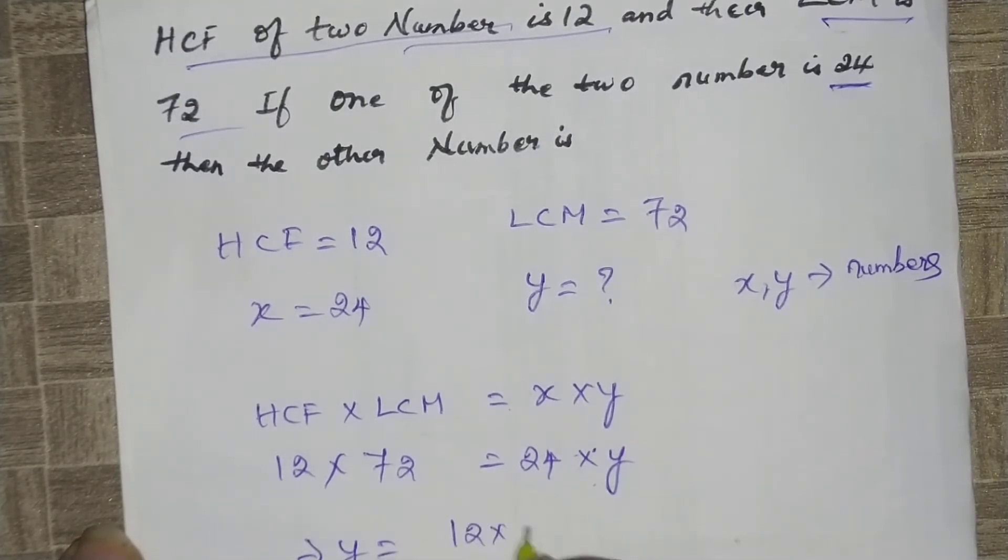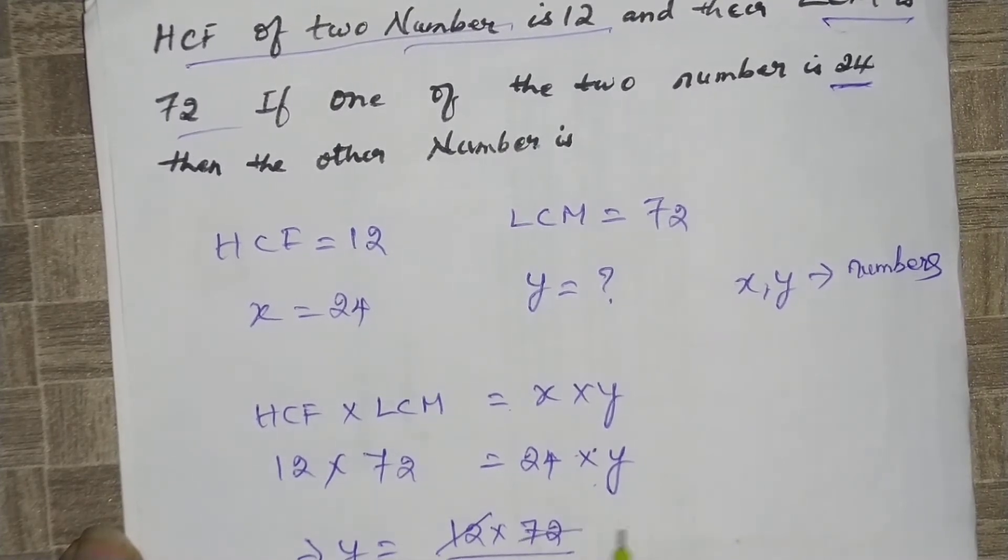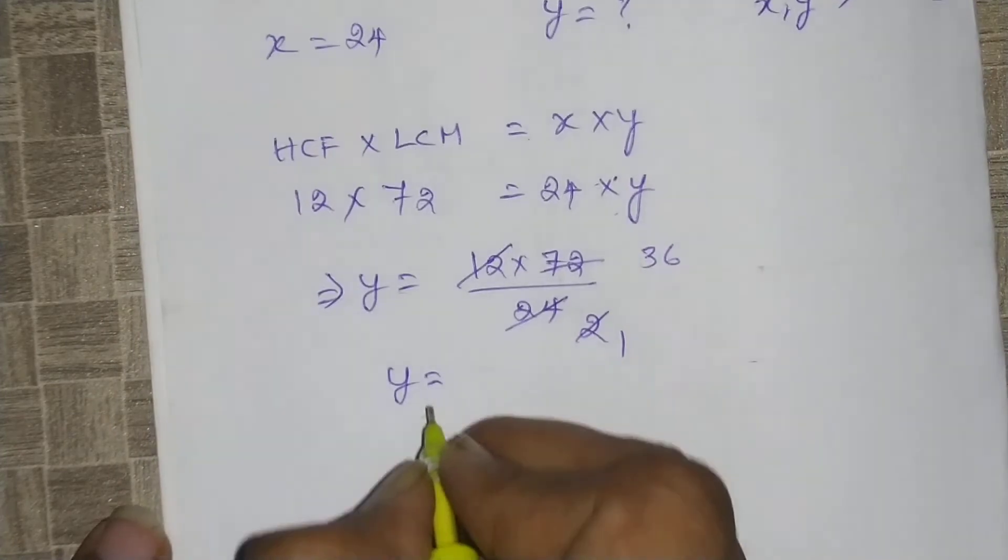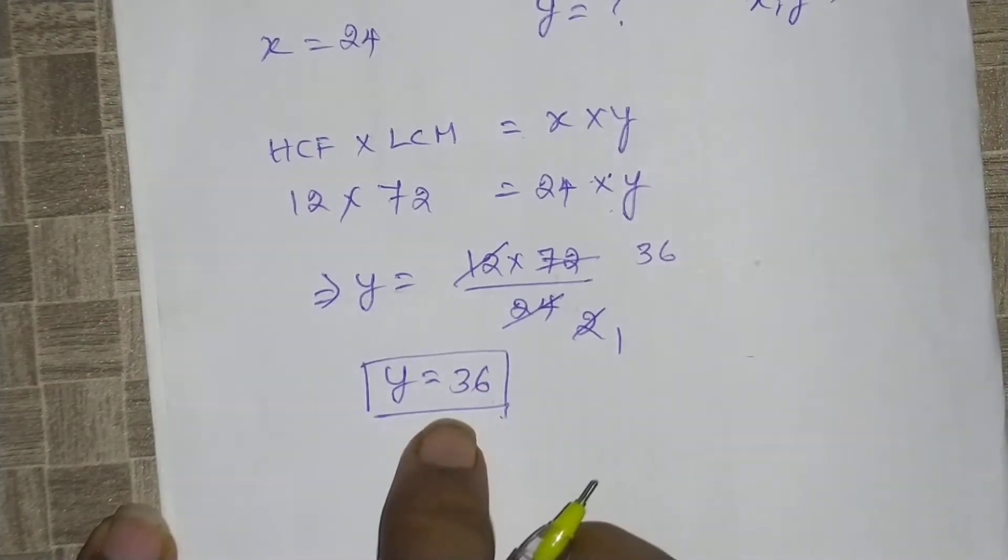This implies y equals 12 times 72 divided by 24. Simplifying: 12 divided by 12 is 1, 72 divided by 2 is 36. Therefore, y equals 36. The value of the other number is 36.